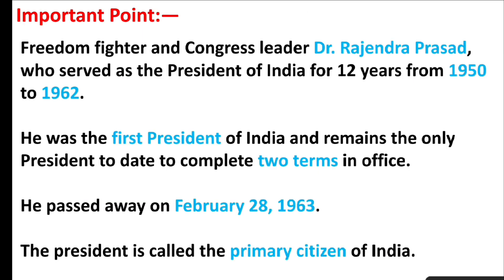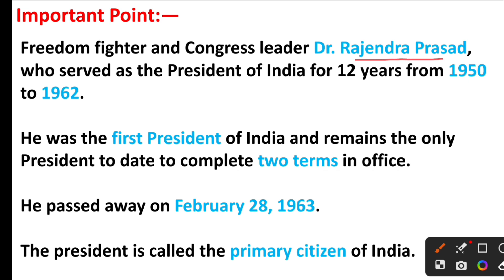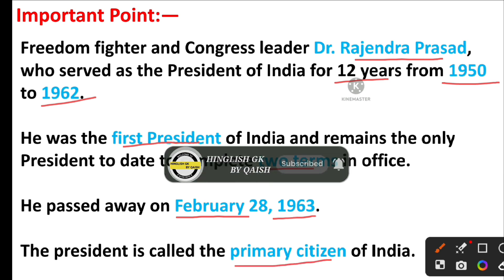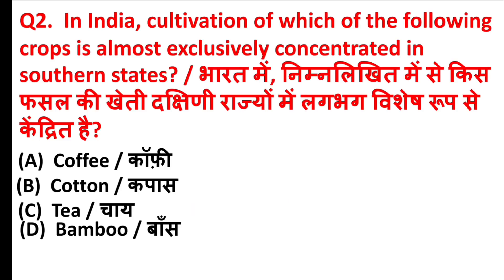The right answer is option C — Rajendra Prasad. Friends, freedom fighter and Congress leader Dr. Rajendra Prasad served as the President of India for 12 years from 1950 to 1962. He was the first President of India and remains the only president to date to complete two terms in office. He passed away on February 28, 1963.